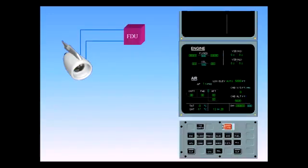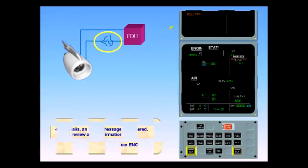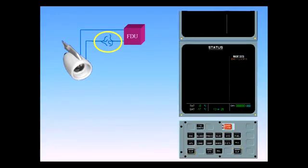If one of the two fire detection loops of an engine fails, an ECAM message is triggered. After review and confirmation, clear engine. Because of the system redundancy, fire detection is still fully operational.